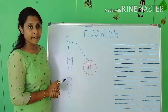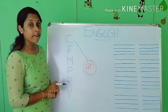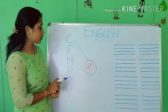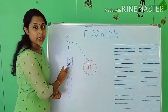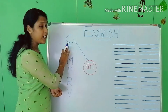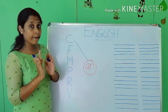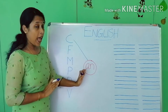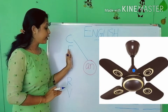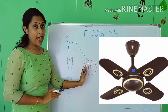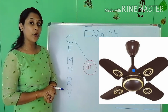Next, take the alphabet F. What is the sound of F? F. F and AN together make the word 'fan'. F, AN — 'fan'.